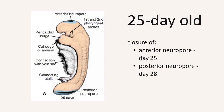Closure of the cranial neuropore occurs at approximately day 25, corresponding to the 18 to 20-somite stage. Meanwhile, the posterior neuropore is still open at day 25, because the posterior or caudal neuropore closes at approximately day 28, which corresponds to the 25-somite stage. When that happens, neurulation is already complete, and you now have a central nervous system represented by a closed tubular structure. The narrow caudal portion becomes the spinal cord, and the much broader cephalic portion will form the future brain.